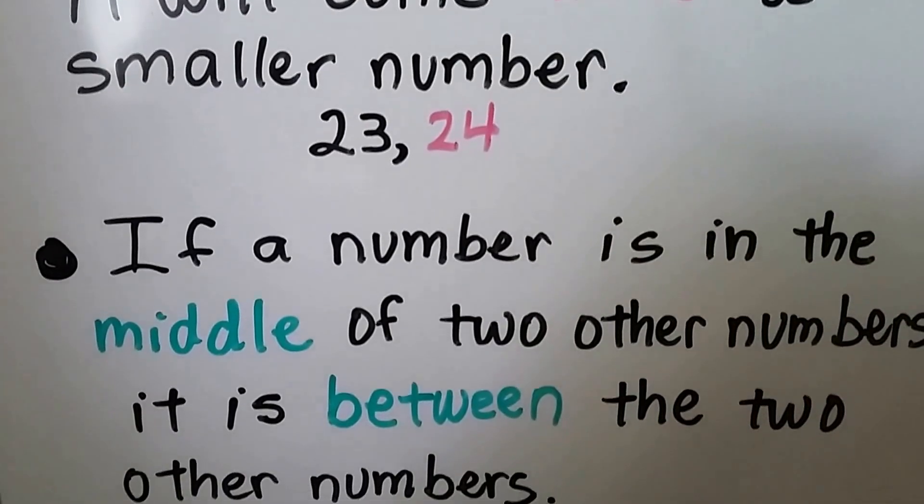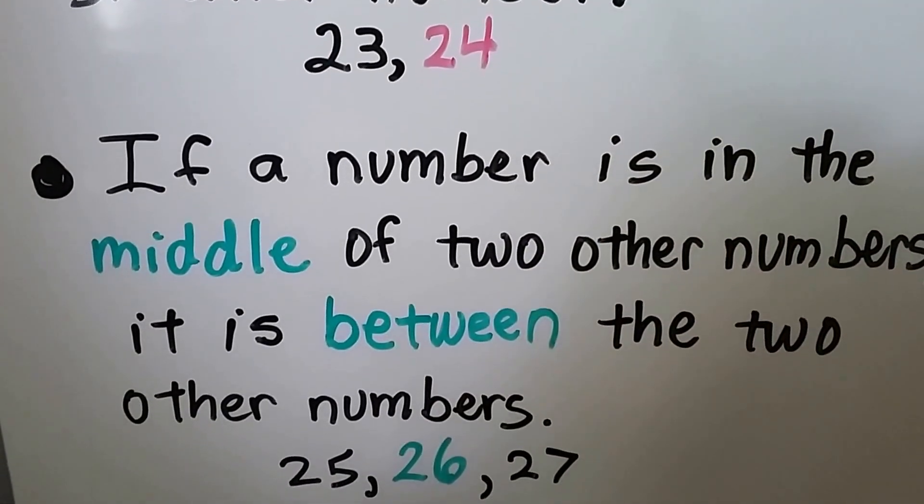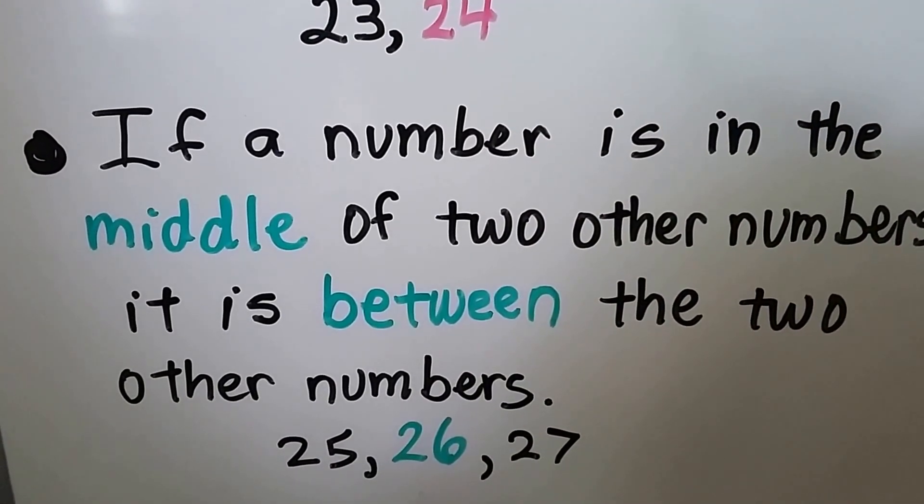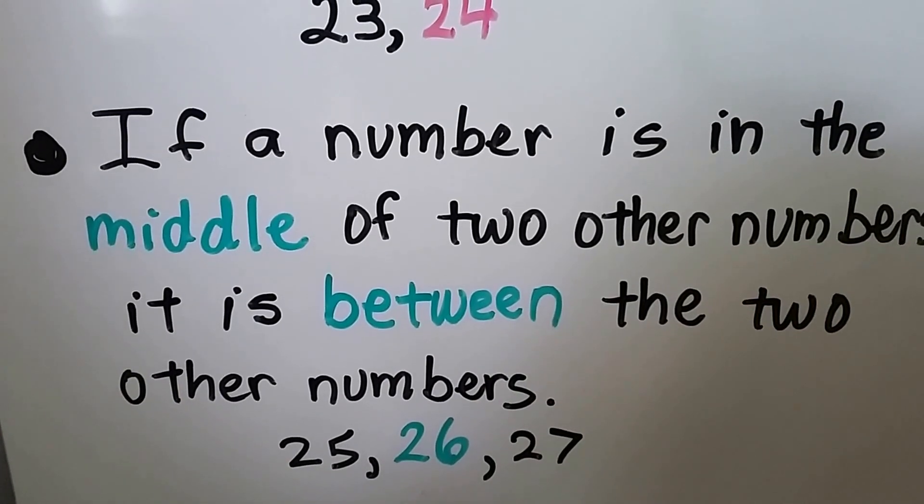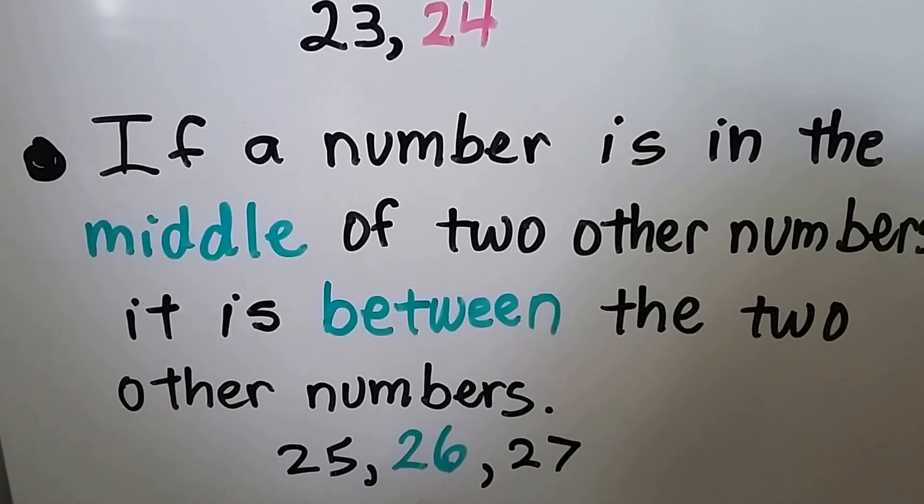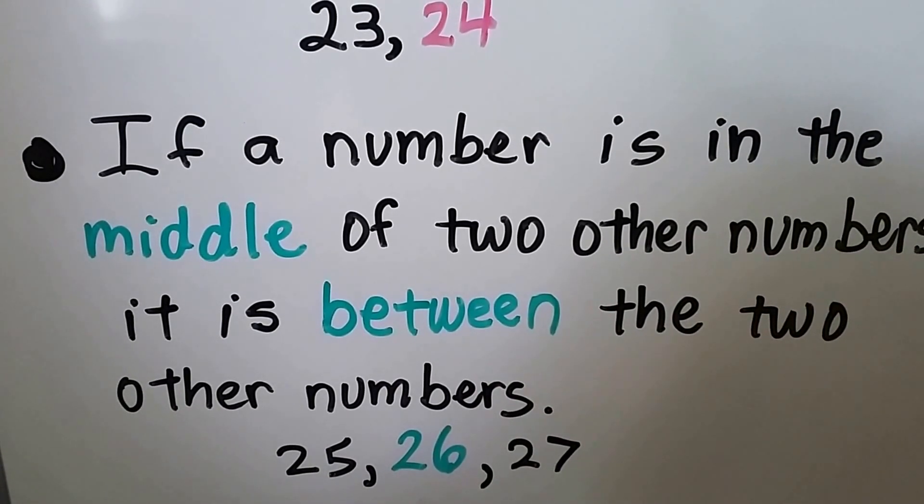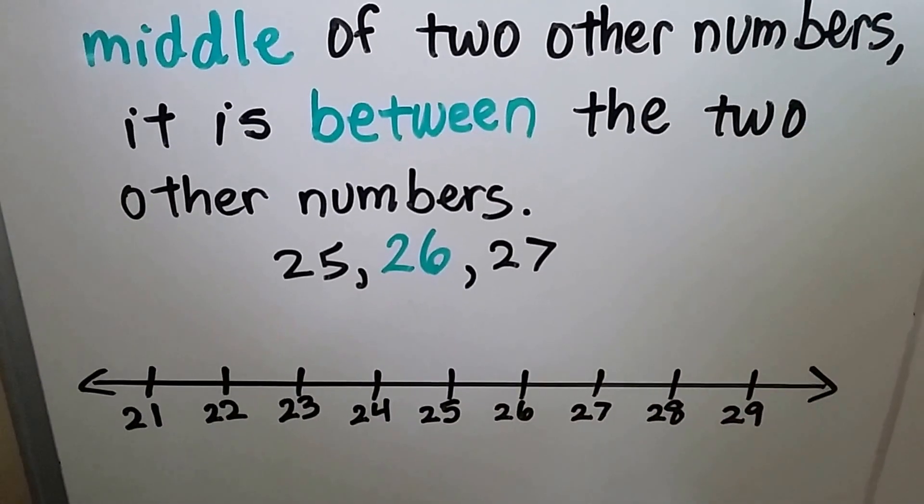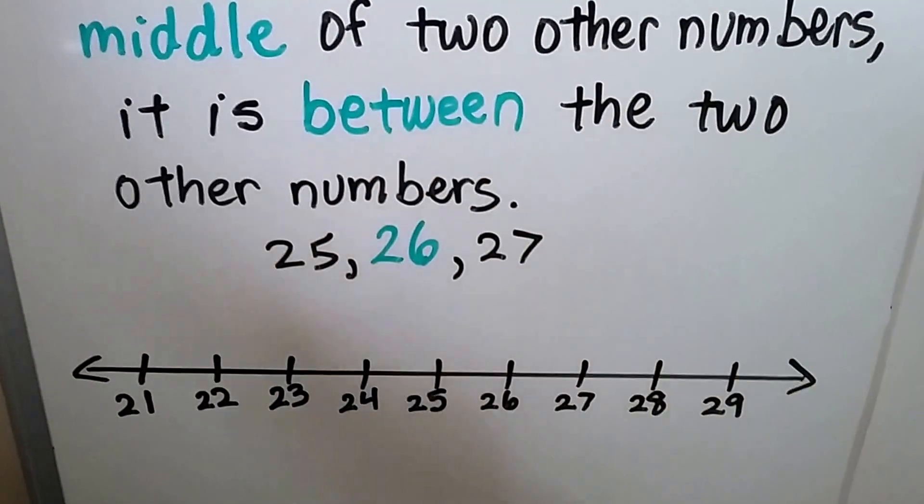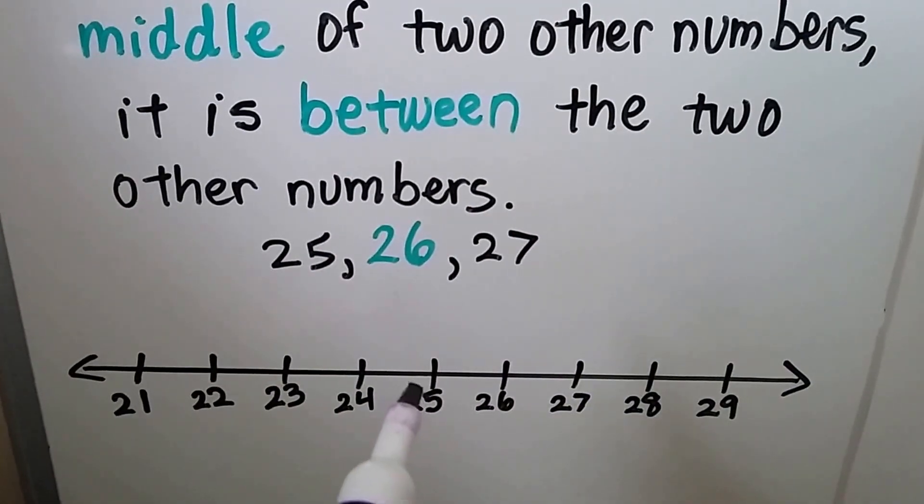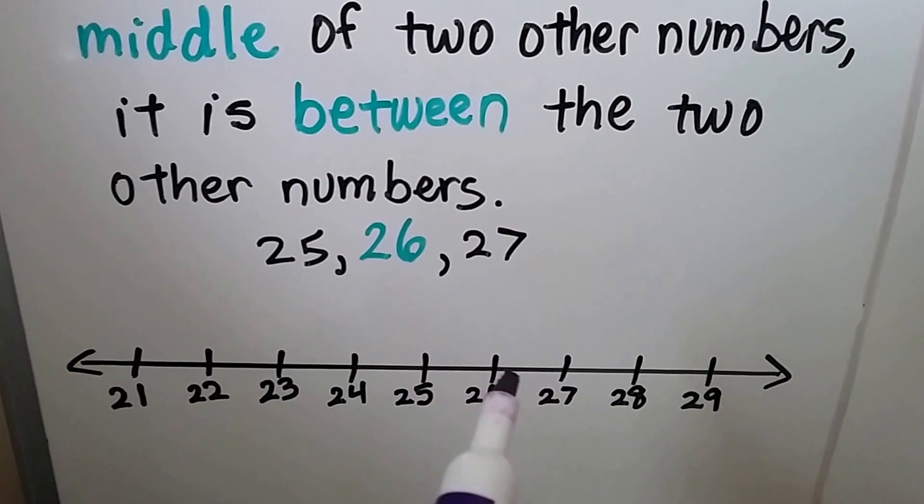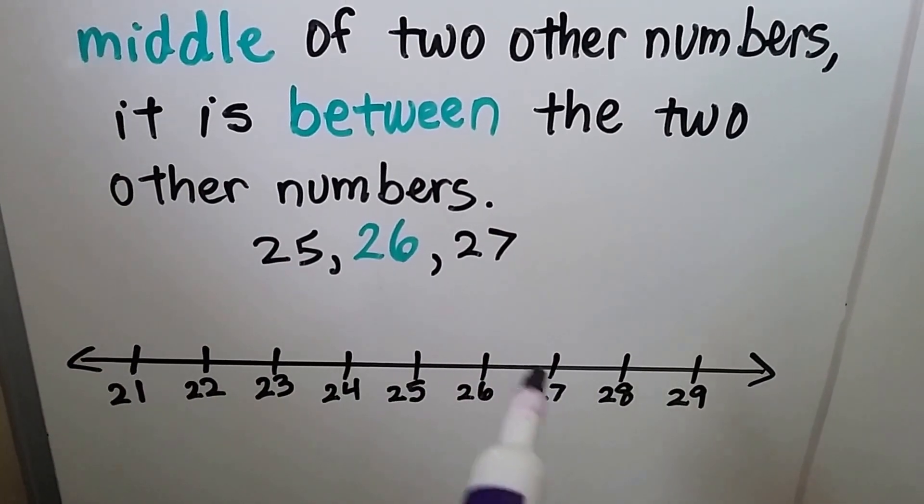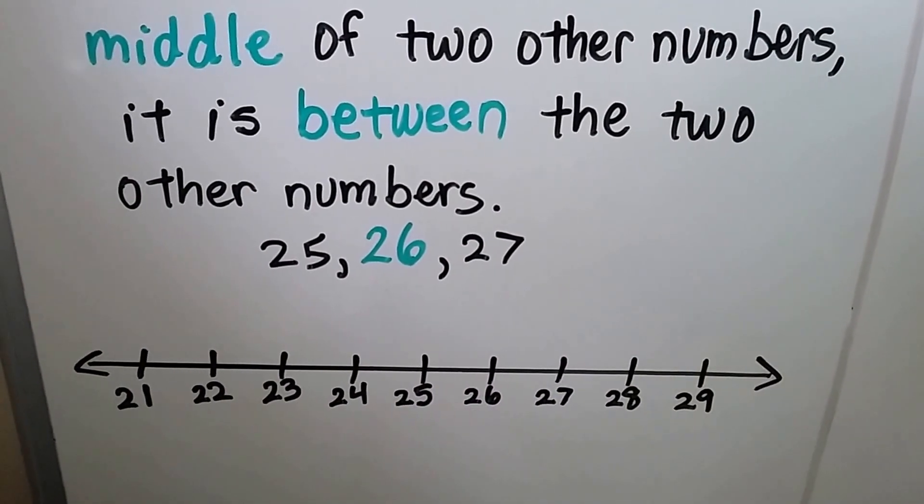If a number is in the middle of two other numbers, it is between the two other numbers. 26 is between 25 and 27. We can use a number line to help us. We can see 25 and 27, and 26 is in the middle of them. It is between them.